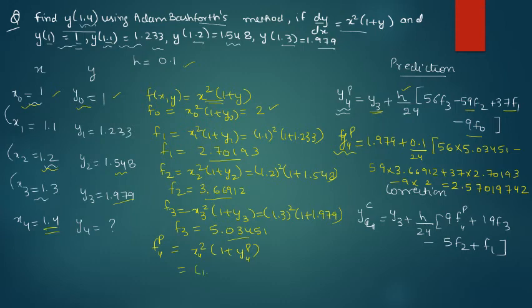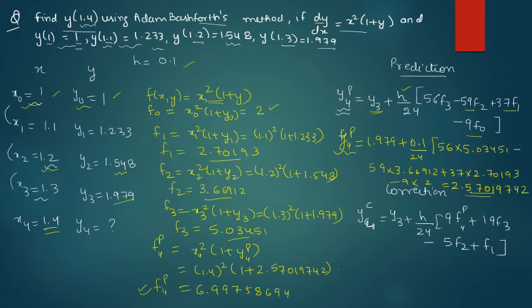So x4 is what? 1.4 (1 plus y4 prediction is 2.57019742). Once you solve this you will get f4 prediction, so that will be 6.99758694. So this is your f4 prediction.